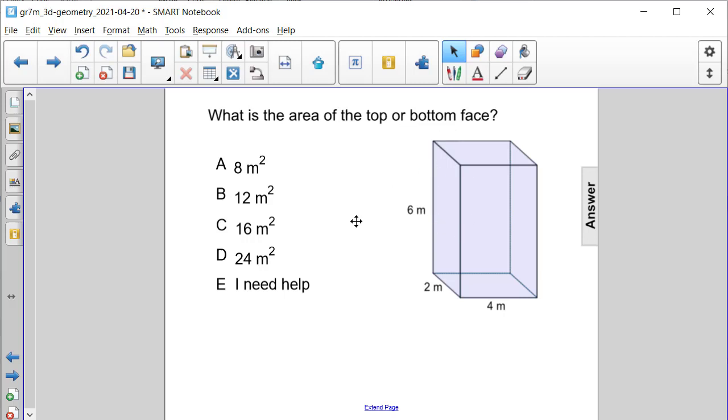What is the area of the top or bottom face of the rectangular prism? Well, we know that the area of any rectangular face in a rectangular prism is calculated using the formula area equals length times width.